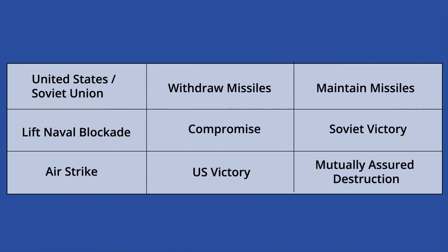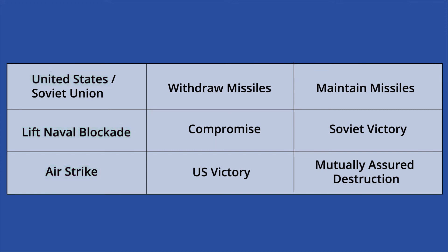Each player then had two possible choices to make. For the U.S., it was to make a surgical airstrike, wiping out the installed missiles by force, or to de-escalate the conflict by lifting its naval blockade. The Soviet Union, meanwhile, could either maintain their missiles or withdraw their missiles from Cuba in a bid for peace.